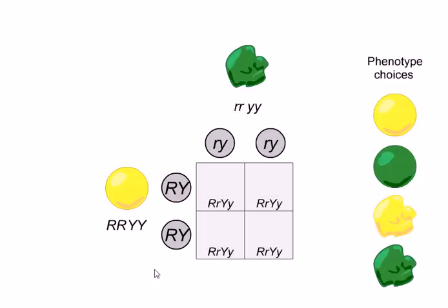Using the information provided, predict the phenotypes of the offspring in each square of the grid. Drag your selections from the phenotype choices.